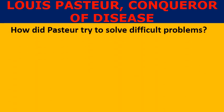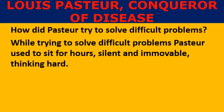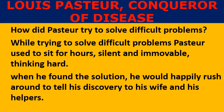How did Pasteur try to solve difficult problems? While trying to solve difficult problems, Louis Pasteur used to sit for hours silent and immovable, thinking hard. When he found the solution, he would happily rush around to tell his discovery to his wife and also to others helping him.